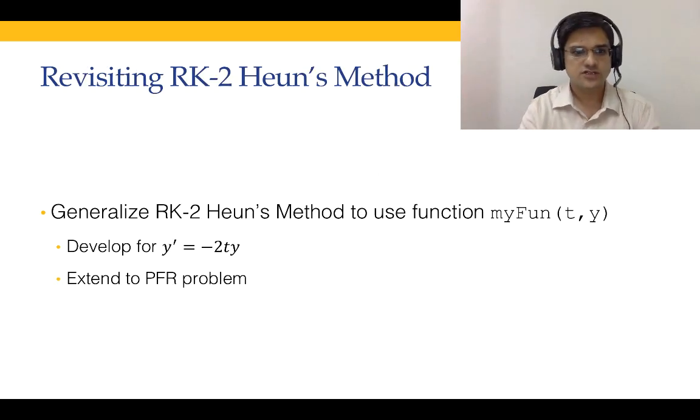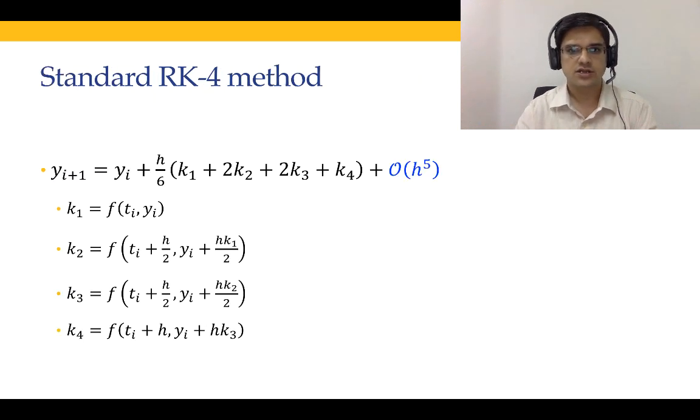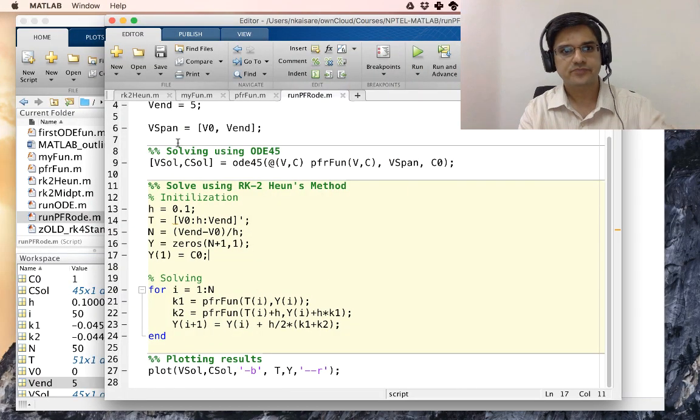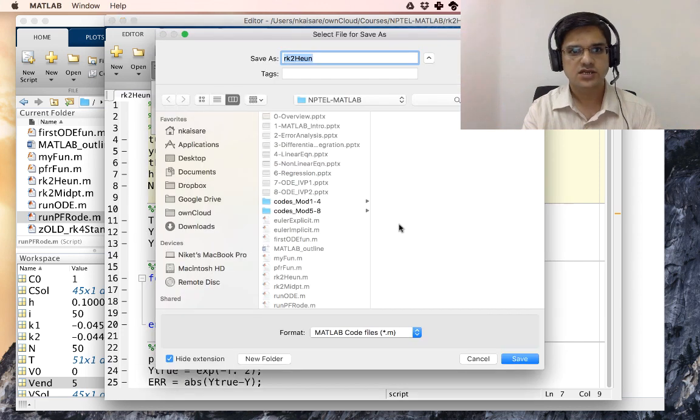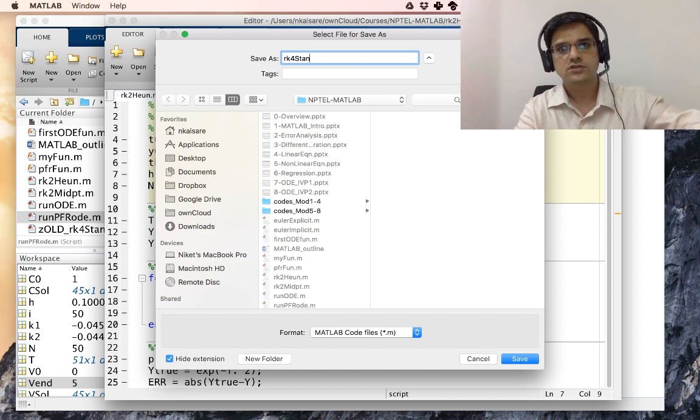We will solve the first problem Y prime equal to minus 2TY using RK4 method. The RK4 method is given over here: YI plus 1 equal to YI plus H by 6 multiplied by K1 plus 2K2 plus 2K3 plus K4 etc. So let us go to MATLAB. Let us open our RK2 Heun's method and save this as RK4 standard.